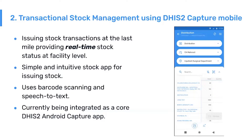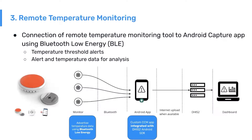The next feature is a transactional stock management tool using DHIS2 Capture Mobile. This allows for transactions to be captured when they happen for each item, providing an actual real-time stock system whenever the application is synchronized with a central server. There is also a tool for remote temperature monitoring, capturing data from a Bluetooth temperature monitor and connecting it to the Android Capture device, and integrating this with a central server.